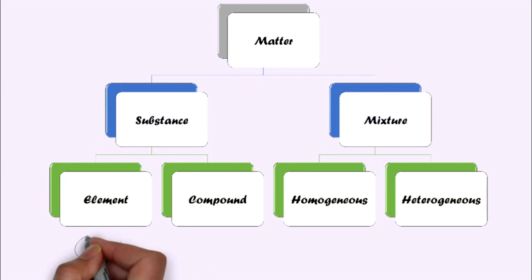An element is made up of similar type of particles. For example, gold coin. I am talking about pure gold coin. This pure gold coin will be made up of only gold particles.